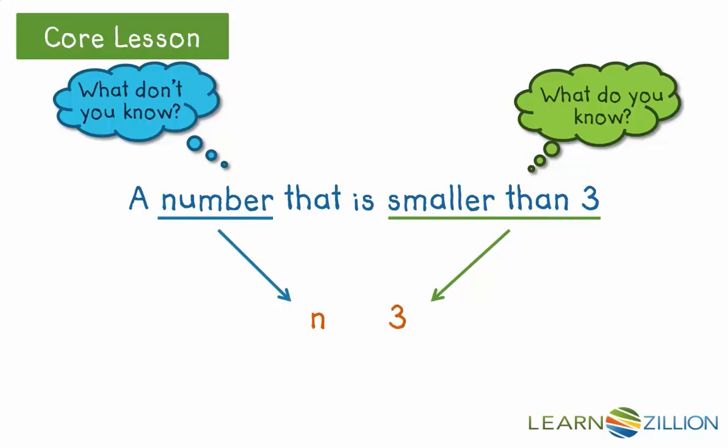We also know that more than one number can be smaller than 3, so our variable represents a group of numbers. How can we mathematically represent a group of numbers? We can use an inequality. So if we know that our variable n is smaller than 3, we write n is less than 3. This represents a group of numbers that is smaller than 3.